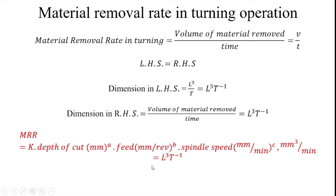By conducting experiments with different workpiece materials, I can get the C value and the final dimension is L cubed into T power minus 1. The question arises: why consider depth of cut, feed rate, and spindle speed? Because material removal rate mainly depends on these machine tool parameters.